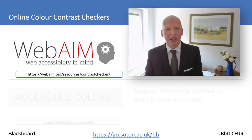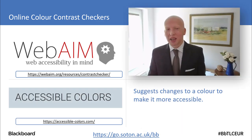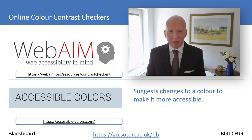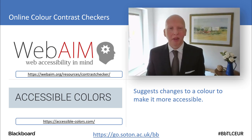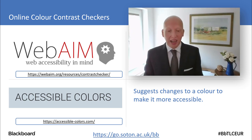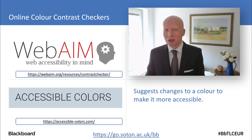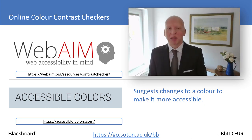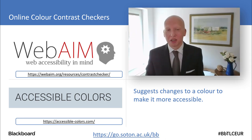Another one you might find particularly useful: the site Accessible Colours. You put in two colours, it tells you the contrast between them, but it also suggests how to change that colour to make it meet the required contrast ratio. So if you have two colours and need something that, if not exactly on brand, can be adjusted to be acceptable — this will show you how to make a compliant version of a colour.